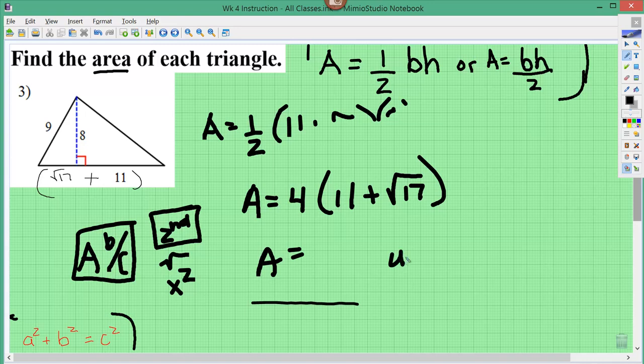And then you also say unit squared. That's how you find, using Pythagorean theorem, that's how you find the area of a triangle when a segment or a leg is missing. That's it.